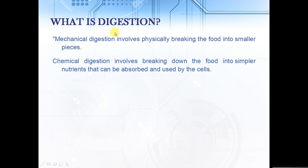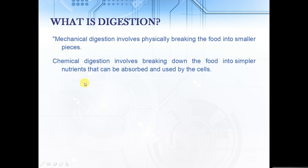So first of all, what is digestion? Digestion can either be mechanical, which involves physically breaking the food into smaller pieces, and chemical, which involves using enzymes breaking down the food into simpler nutrients that can be absorbed and then used by our cells.